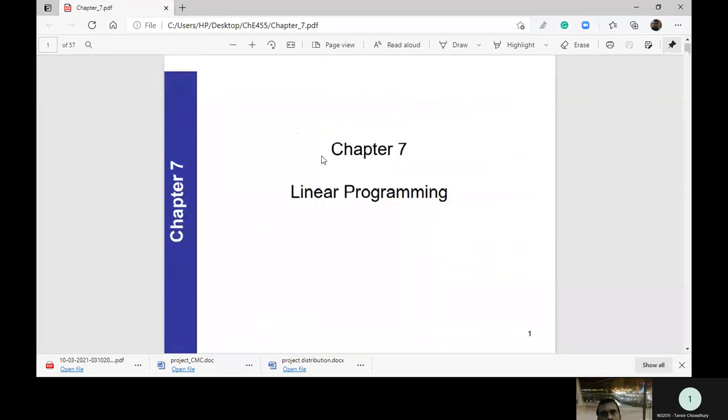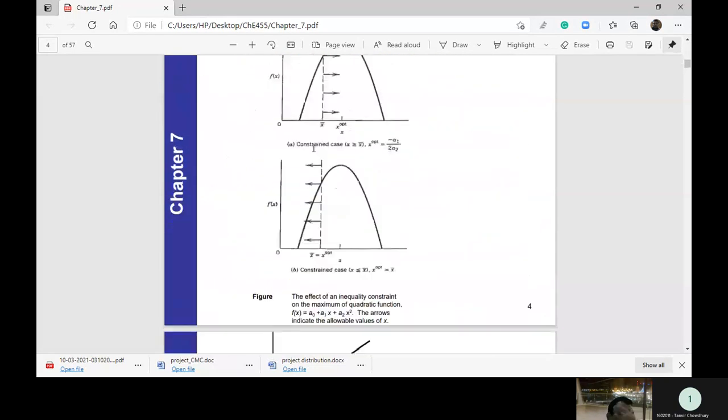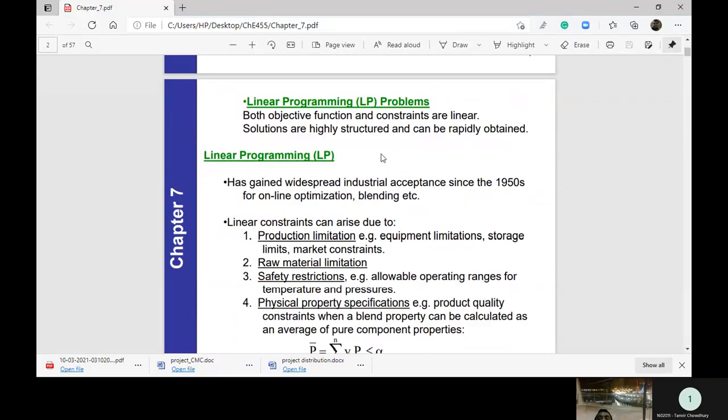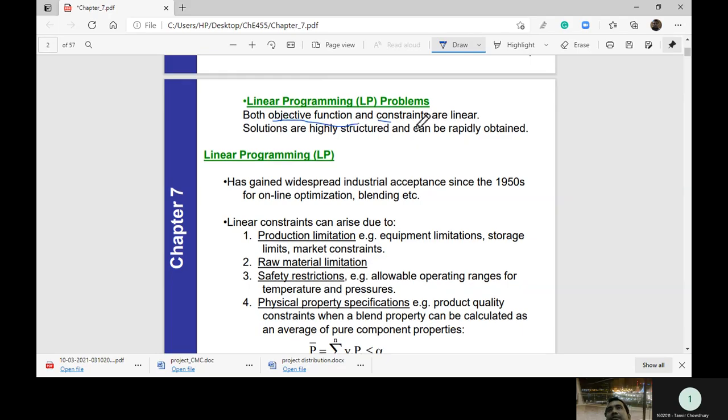Very good. Basically, the problem was the common type of optimization problem. It was linear programming. This is widely used. This is the objective function and constraint. What is the linear equation? This is the linear programming.